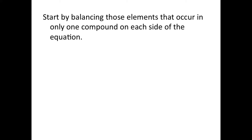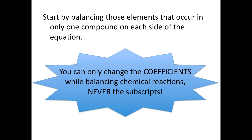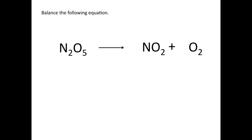If you're ready for the second video, remember that to balance a chemical equation we need to have the same number of atoms on each side of the equation. We do that by changing the coefficients in front of the compounds — never changing the subscripts, because that would alter the substance and make it something different. Now let's jump right into some examples.